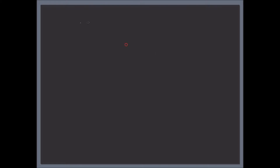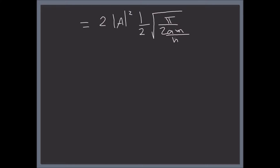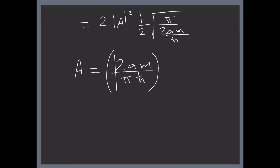Simplifying a little bit further, this integral gives us 2 times the magnitude squared of A, times one half times the square root of pi divided by 2aM divided by h-bar. Simplifying and solving for A, we get A to be the fourth root of 2aM divided by pi*h-bar. This is the normalization constant.